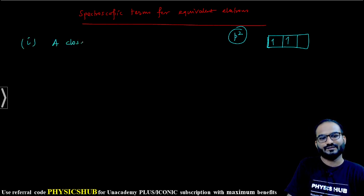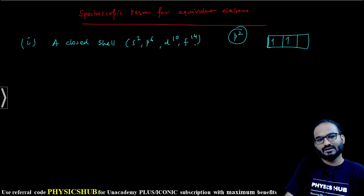The first thing you need to keep in mind here: any closed shell - let's say P⁶, F¹⁴, S² - these are closed shells. S², P⁶, D¹⁰, F¹⁴ - a closed shell always forms one ¹S₀ term.